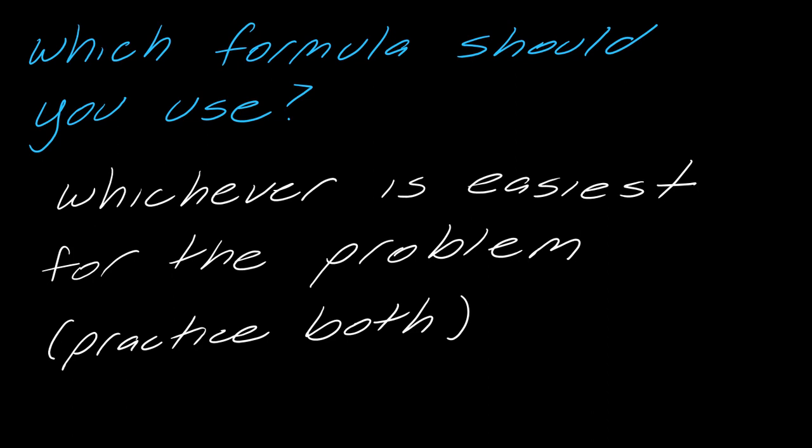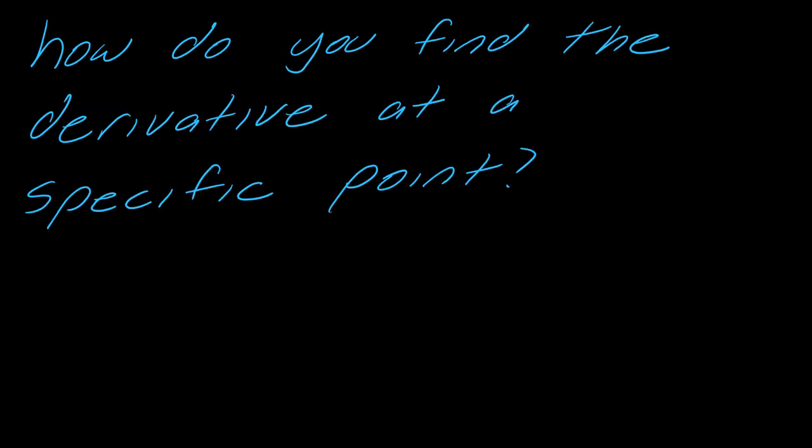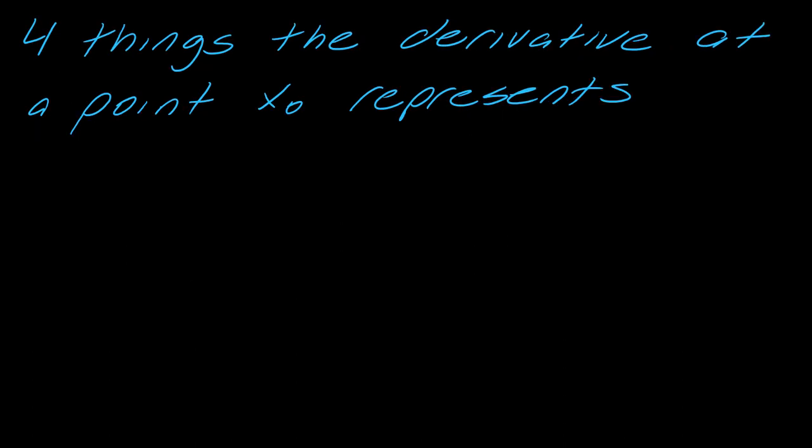Okay. So there's a couple other things I want to talk about with this. So I want to talk about the derivative at a specific point. How do you find this? How do you find the derivative at a specific point? Well, all you have to do if you're trying to figure out the derivative at a point is to plug in that point. And derivatives at points are actually incredibly powerful. They tell you a lot of things about the function. So I want to now make a list that I'd highly recommend you write down of four things that the derivative at a point, we'll call the point x naught, four things this represents.